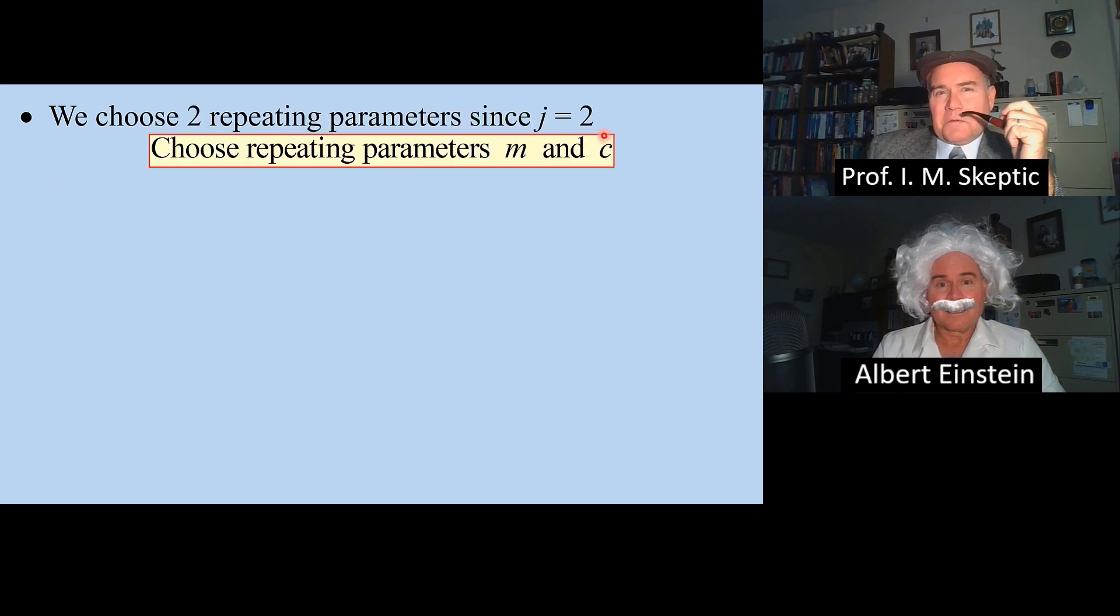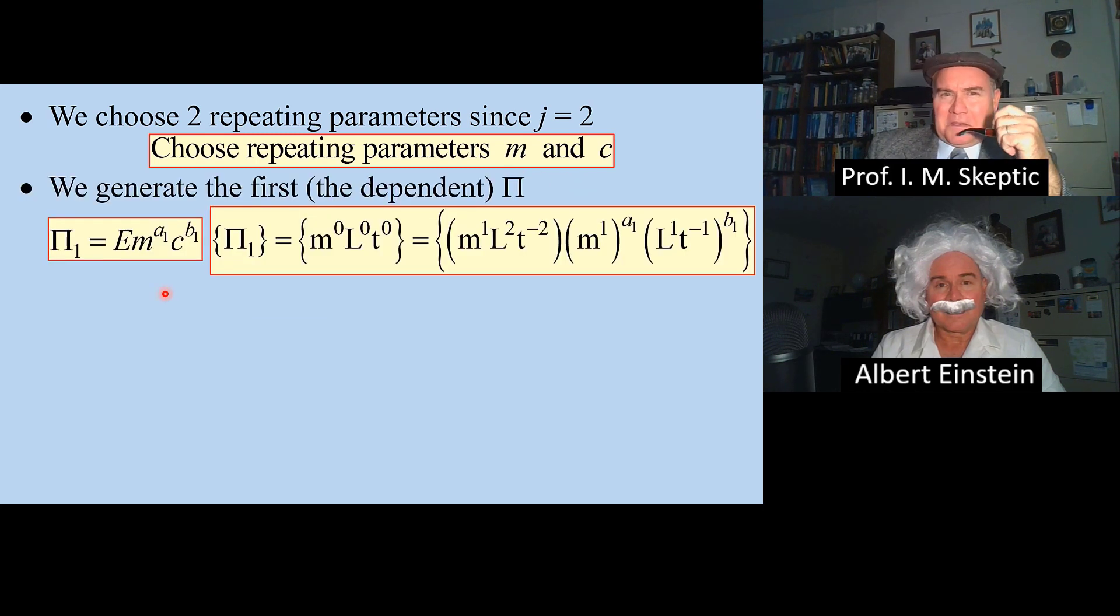Since j equals 2, we pick two repeating parameters. I chose the two independent ones, m and c. We generate the first pi by dimensional reasoning. We set pi 1 to the dependent variable, e, times the two independent variables to some unknown exponents.